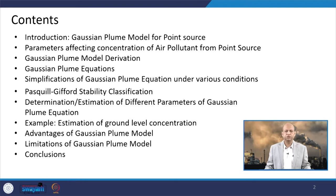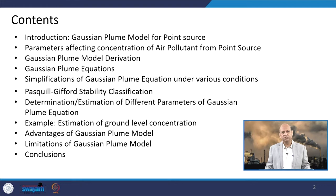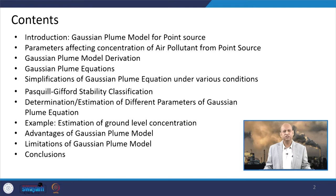We will discuss the Pasquill-Gifford stability classification again, in particular for the change of wind velocity with respect to height and with respect to different terrains. Then we will have one estimation of ground level concentration as a demonstration, and at last we will see certain advantages and limitations of the Gaussian plume model and then conclude.